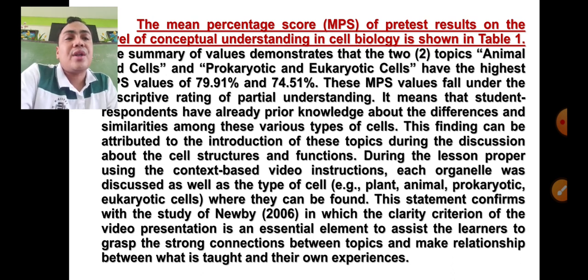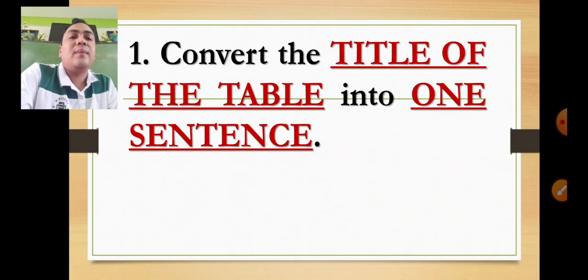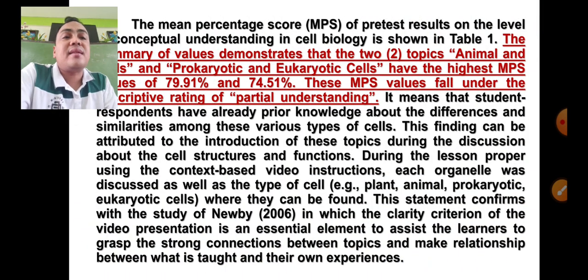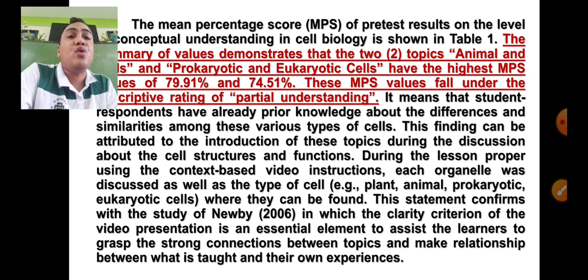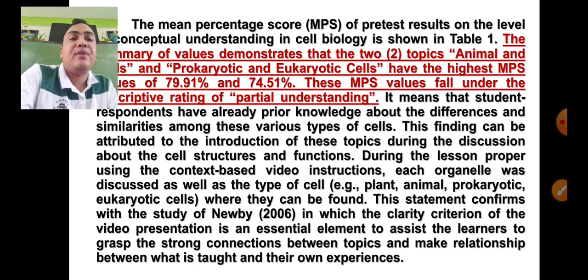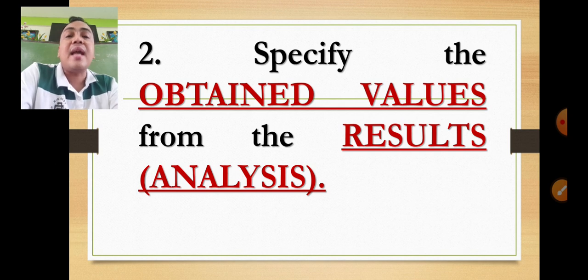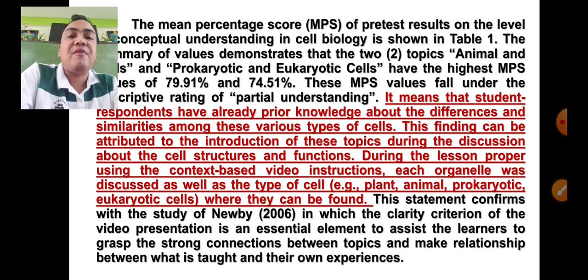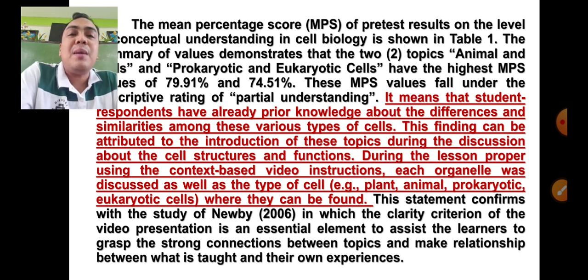In writing your results and discussion: the first sentence must be the title of the table converted into one sentence. Then specify the obtained values — for example, the two topics 'animal and plant cells' and 'prokaryotic and eukaryotic cells' have the highest MPS values of 79.91% and 74.51%, falling under the descriptive rating of partial understanding. Specifying the obtained values is your analysis part. After specifying the values, make an interpretation — interpret what the numerical values of 79.91% and 74.51% mean.